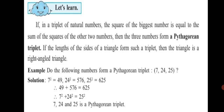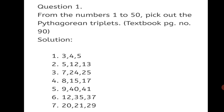An activity is given in your textbook on page number 90: from the numbers 1 to 50, pick out the Pythagorean triplets. The solution is given here — 7 triplets are listed. You can write them down in your notebook as an additional activity.